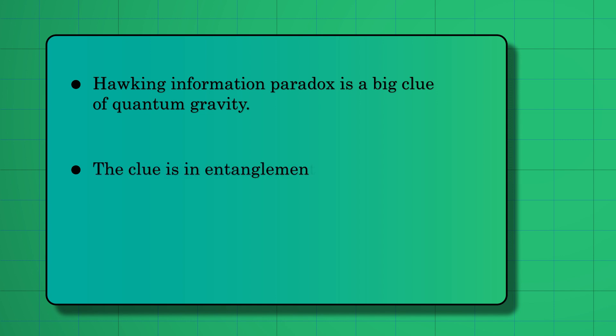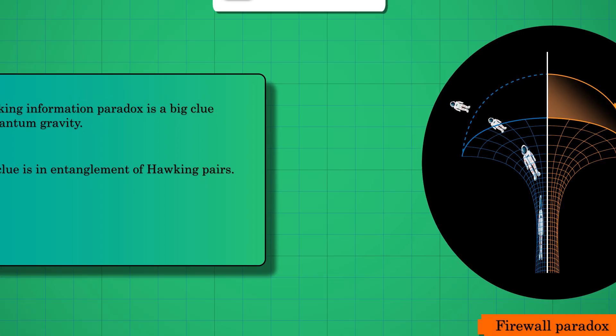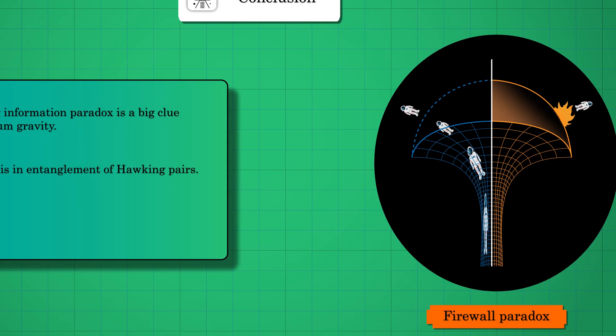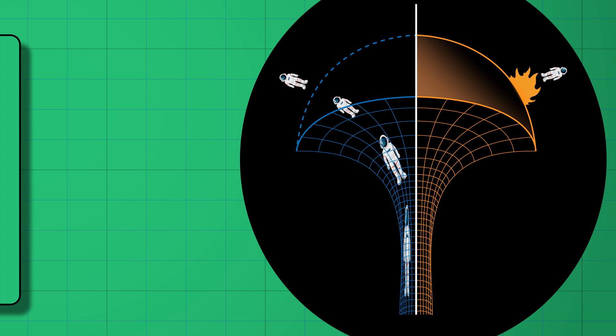Hawking pair particles are formed at the black hole horizon where general relativity and quantum mechanics are expected to hold. This follows from Einstein's equivalence principle, which says nothing weird should happen on the horizon.